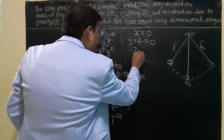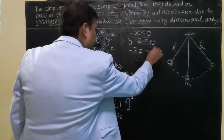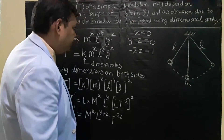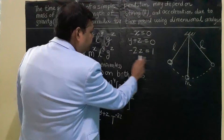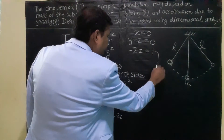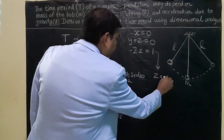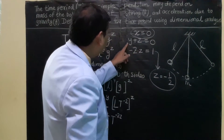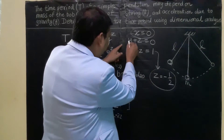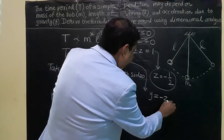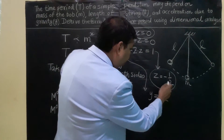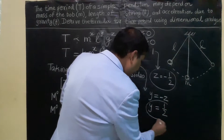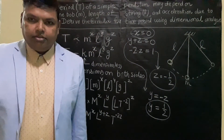We now solve these three equations. The value of X is already known: X = 0. From the third equation, −2Z = 1, so Z = −1/2. From the second equation, Y + Z = 0, so Y = −Z = −(−1/2) = +1/2. We have now found all three powers: X = 0, Y = 1/2, Z = −1/2.